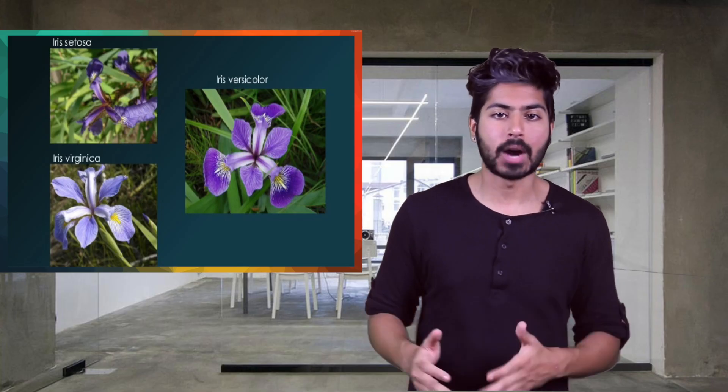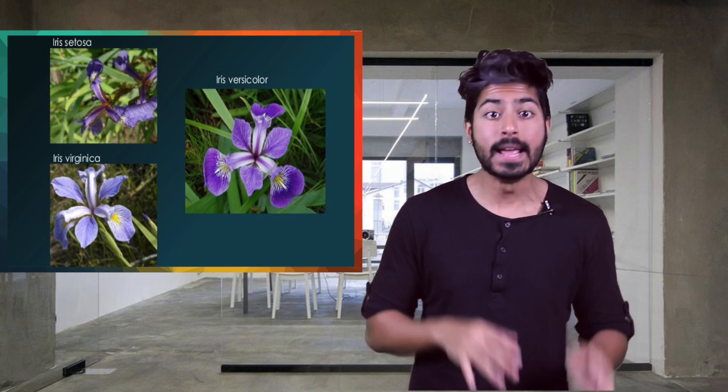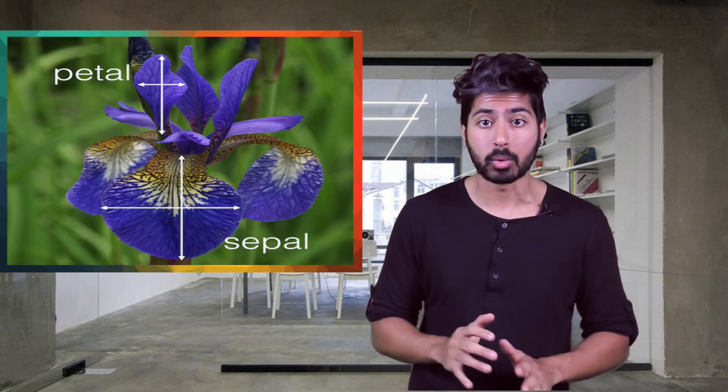Each sample has a label, one of three types of iris: Setosa, Virginica, or Versicolor, and a set of features: sepal length, sepal width, petal length, and petal width.